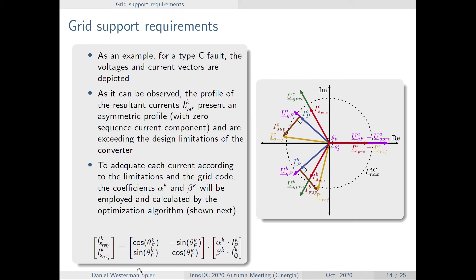So what are we going to do? We're going to decompose the grid current, the real and imaginary part of the grid current, with this expression. So this is the active and reactive currents that the TSO is demanding to us, depending on the fault.